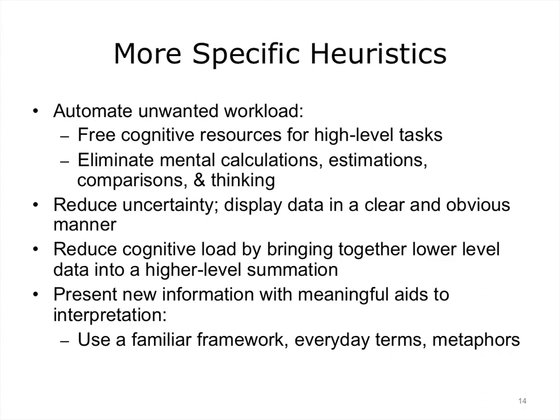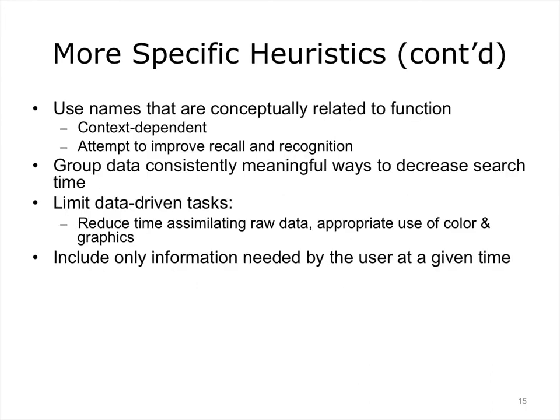Some researchers have taken Nielsen's heuristics and made them more specific to particular contexts. The heuristics proposed by Gerhard-Powell focus on judging a system in terms of how much energy expenditure is necessary to perform tasks, including displaying data in a clear and obvious manner and bringing together lower-level data to a higher-level summation. These are principles very important in data analytics. Gerhard-Powell also suggested heuristics for grouping items effectively to reduce search and minimizing cognitive load by aggregating lower-level data into summaries, which can save unnecessary search time through electronic documents such as lab reports.